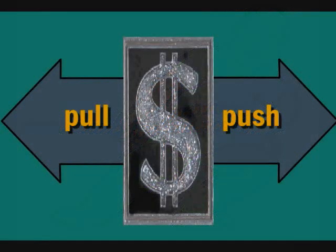Cost-push inflation happens when there is an increase in the cost to produce goods and services. These increased production costs could be increases in the cost of raw materials, energy, or any other item used in production. They also could be increases in wages, sometimes referred to as wage-push inflation or the price-wage spiral.